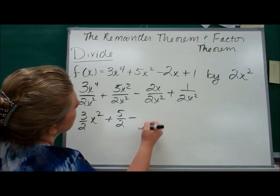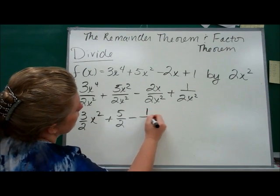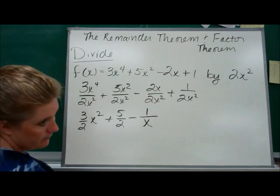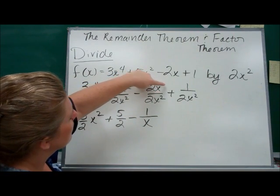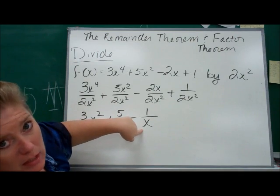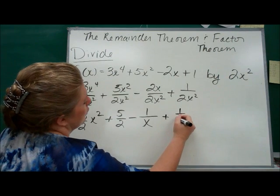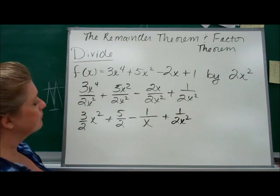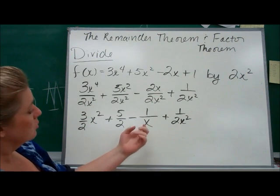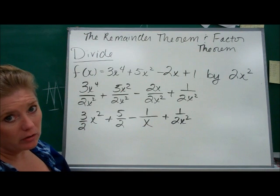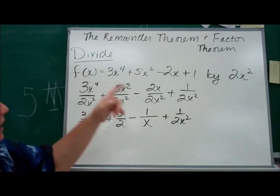Then this is going to be minus — the 2s will cancel, and then we've got x divided by x squared, so that's going to leave us with a 1 over x, because when you subtract, it's going to be x to the 1 minus 2, which is x to the negative first, which moves the x to the denominator. And then this will just be plus 1 over 2x squared. It's no longer a polynomial function because you cannot have x's in the denominator and have it be a polynomial function. But that's how you divide a polynomial by a monomial.